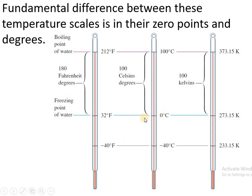Look at this scale — we generally use this scale in our normal life. 0 degree Celsius is the freezing point of water and 100 degree Celsius is the boiling point of water. With reference to these two temperatures, if we look at the Fahrenheit scale, 0 degree Celsius refers to 32 degree Fahrenheit and 100 degree Celsius refers to 212 degree Fahrenheit.